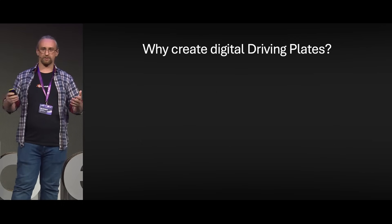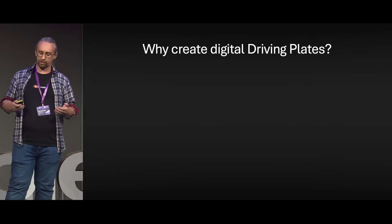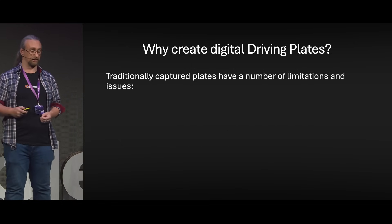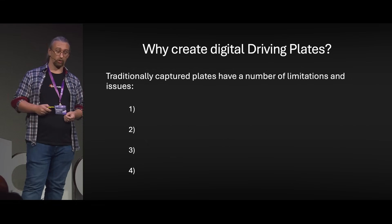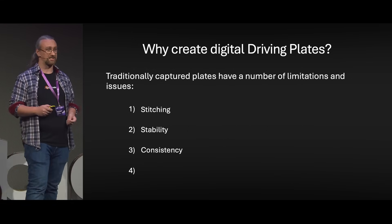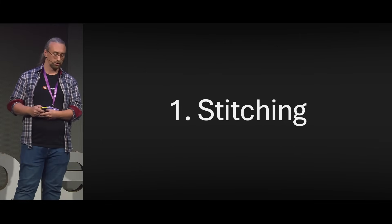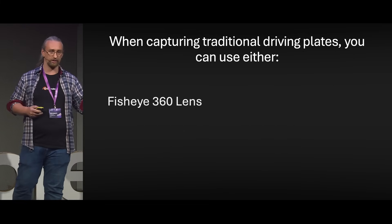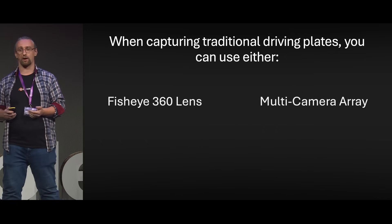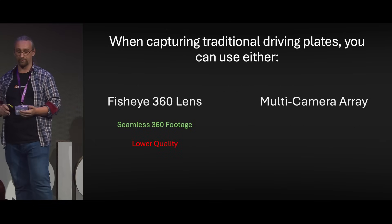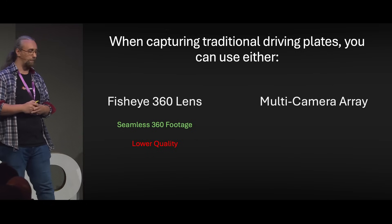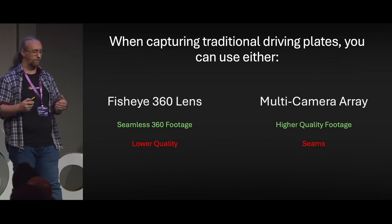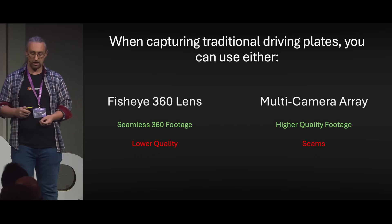So, why are we creating digital driving plates? Traditionally captured plates have a number of limitations and problems that can cause headaches for filmmakers. The big four that we're trying to solve are stitching, stability, consistency, and customization. Firstly, stitching. When you're capturing a traditional driving plate, you can either use a fisheye 360 lens or a multi-camera array. With fisheye, you get seamless 360 footage, but often at the cost of lower quality. With a multi-camera array, you get much higher quality footage, but you're going to have stitching and seam lines.